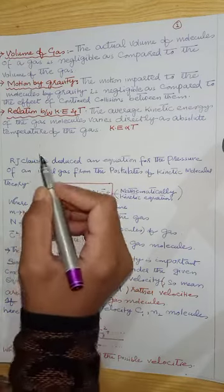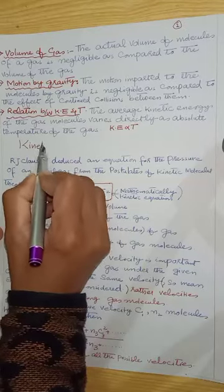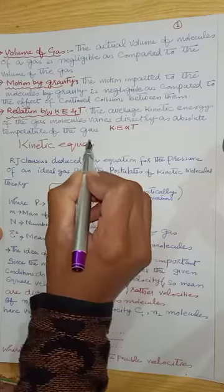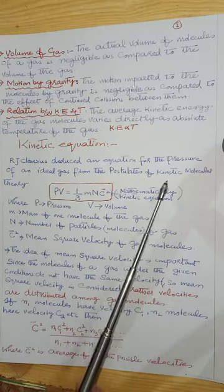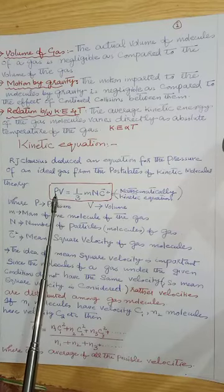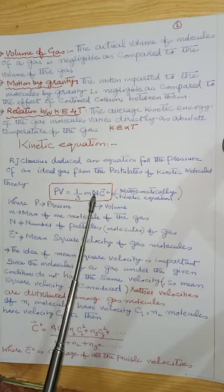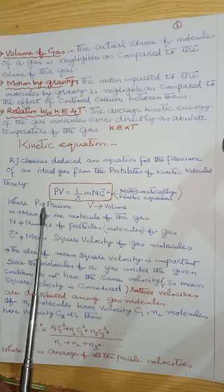We have come to the kinetic equation expression. R. J. Clausius has given a mathematical expression for the pressure of an ideal gas from the postulates of kinetic molecular theory. The product of pressure and volume is equal to 1/3 mnc̄². Mathematically, this is the kinetic equation.